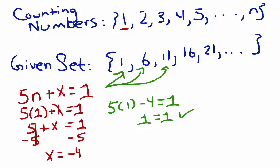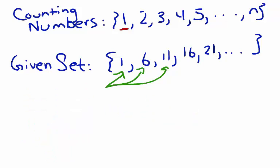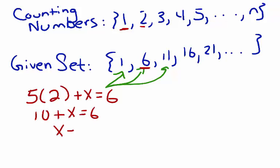We'll try that for each value of n. Let's try when n equals two. So now we say five times our natural, or counting number, two, plus x equals six, because that's the corresponding value in our given set. That gives us ten plus x equals six, or x equals negative four. Again, substituting negative four into our expression will give us a consistent result.